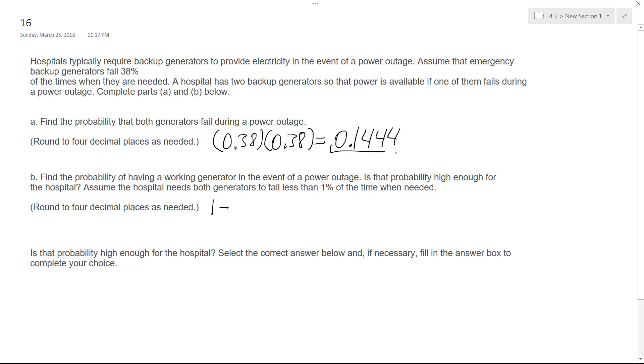It's just one minus what we have up here, which is 0.1444, which is going to be equal to 0.8556. So there's an 85.56 percent chance that there's going to be at least some power.